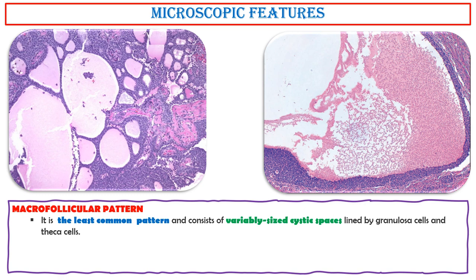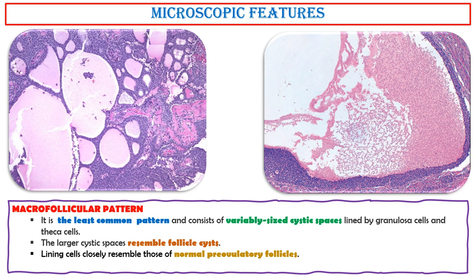Macrofollicular pattern. It is the least common pattern and consists of variable-sized cystic spaces lined by granulosa cells and theca cells. The larger cystic spaces resemble follicle cysts. Lining cells closely resemble those of normal pre-ovulatory follicles. The presence of Call-Exner bodies in the cyst wall is a helpful diagnostic clue.